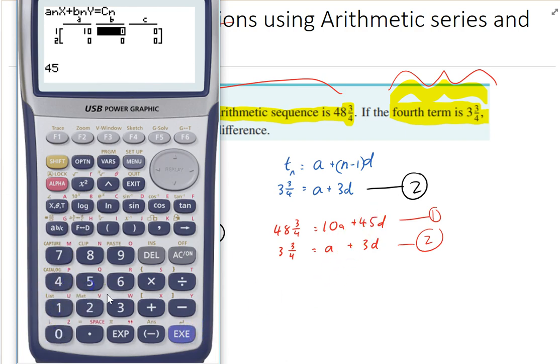45, and 48 and 3 quarters. 7.5. And the other one is going to be 1, 3, and 3.75. And solving.